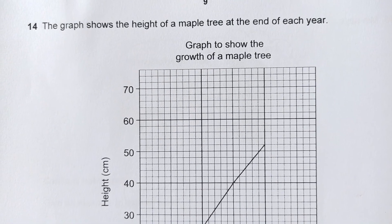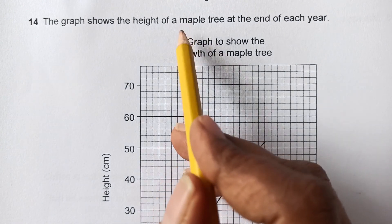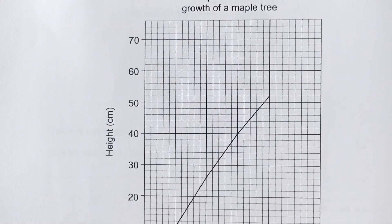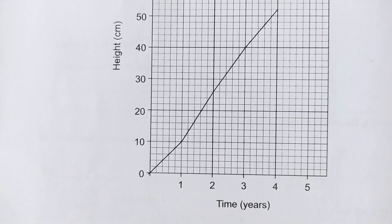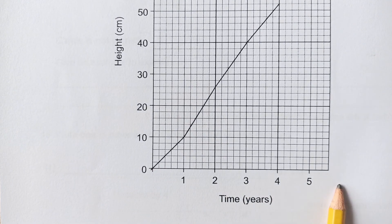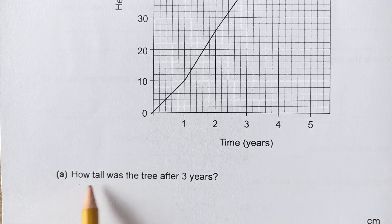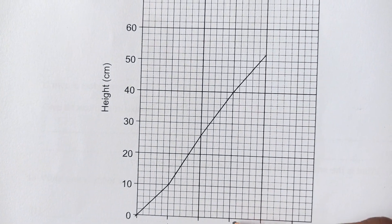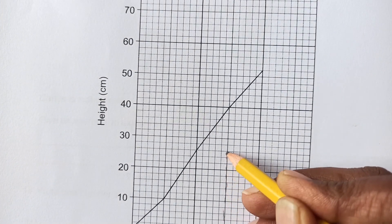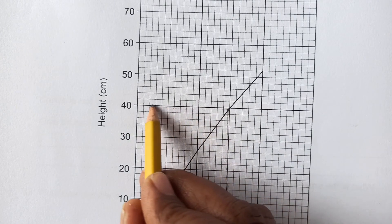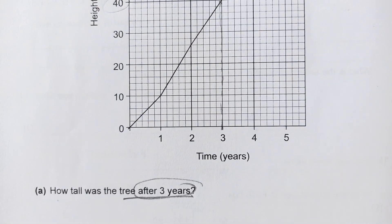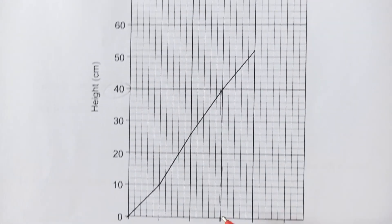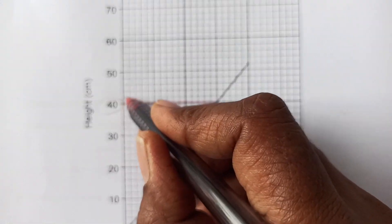Question 14a: the graph shows the height of a maple tree at the end of each year, with height in centimeters on the y-axis and time in years on the x-axis. How tall was the tree after three years? Going up from year 3 to the graph line gives a height of 40 centimeters.